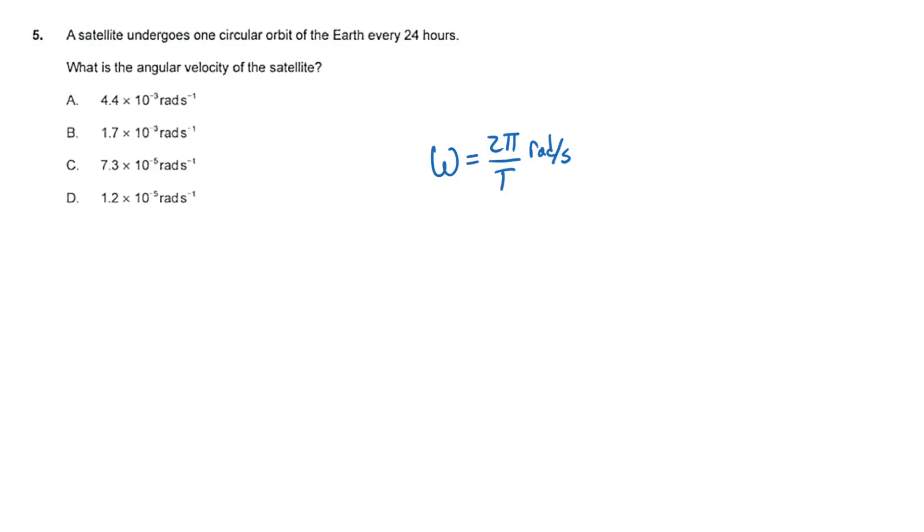We have 2 pi radians, and that is the angle of a full circular orbit. So that means that t, which is our period, has to be measured in seconds in order to get the seconds here.